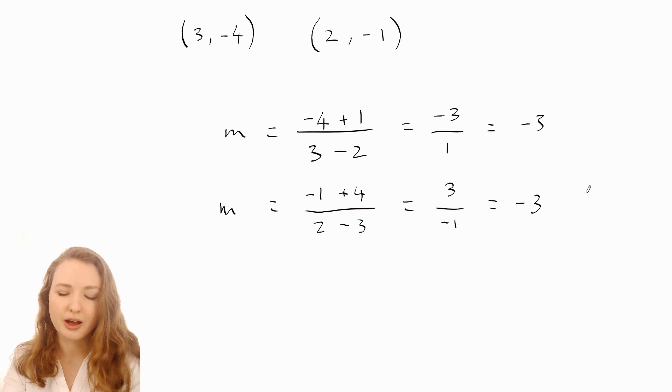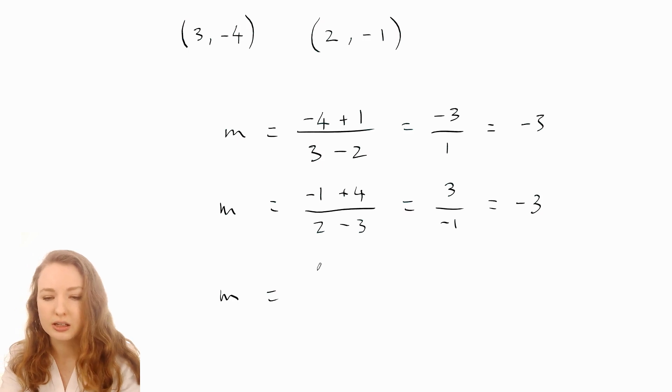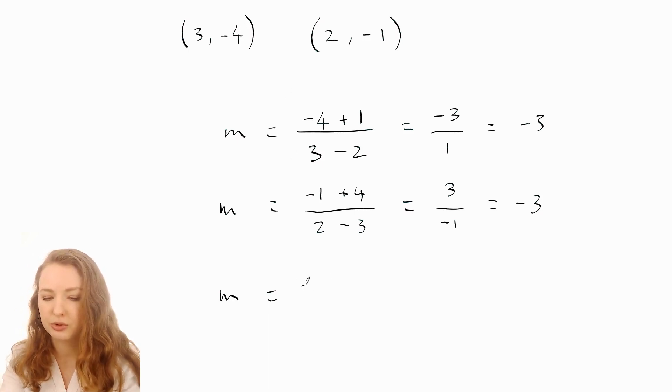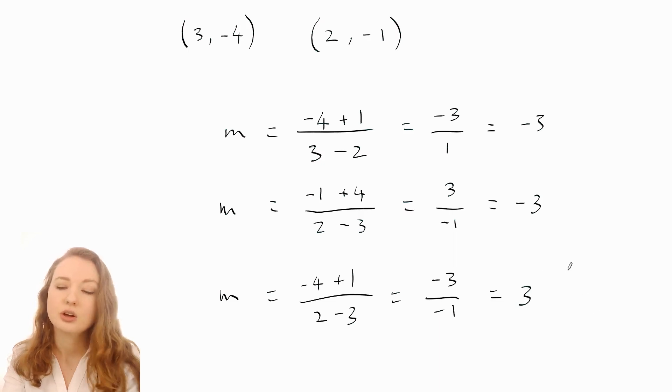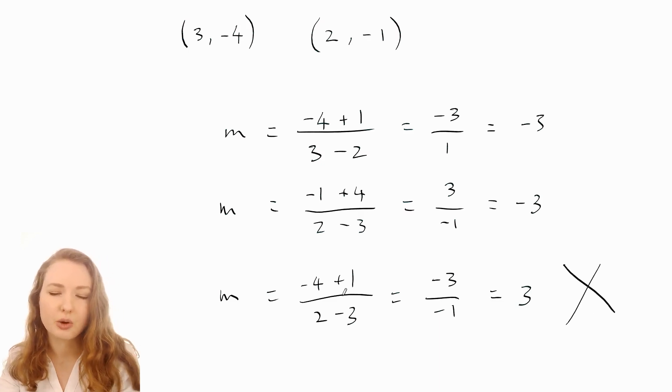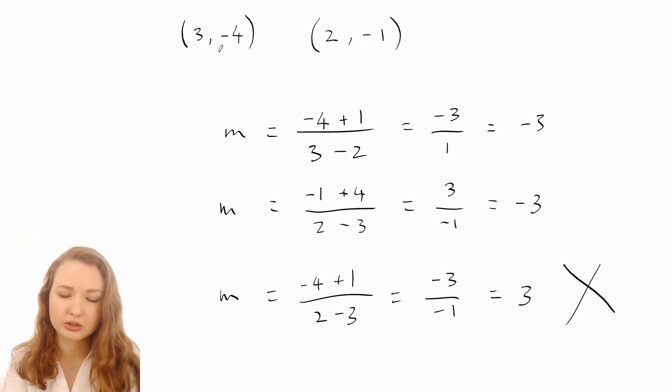Either one of those ways is fine, but a really common mistake is if you mix up the order. If I do the negative four on top first and then accidentally do the two first on the bottom, that's not going to work because that gives us negative three over negative one, which is positive three. So that's wrong. You have to be consistent about which point is point one and which is point two.